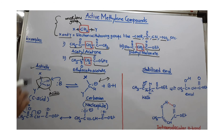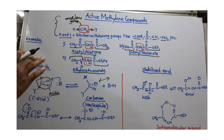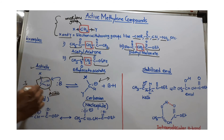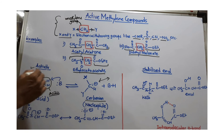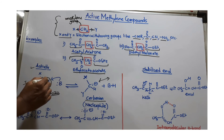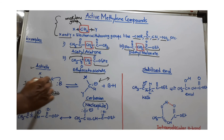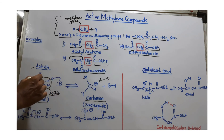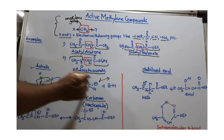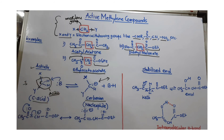These compounds are called active methylene compounds because of their active methylene group and active protons. The methylene carbon is also called a carbon acid, because the acid proton is generated from this carbon, and it can produce a carbanion. This is the activity of the active methylene compound.